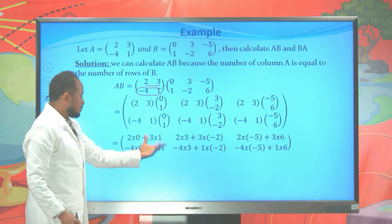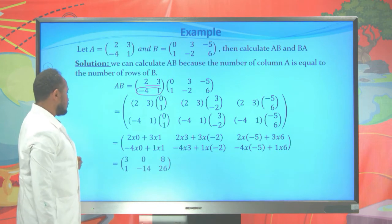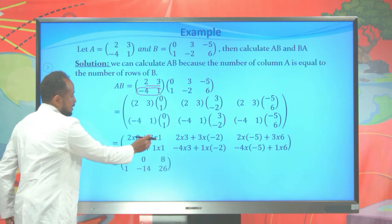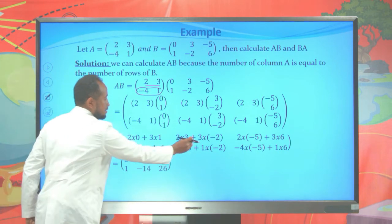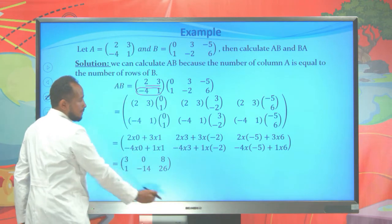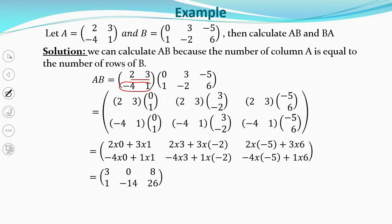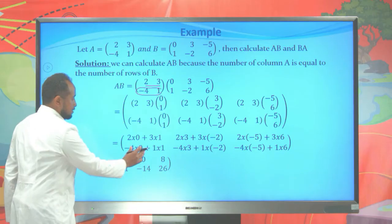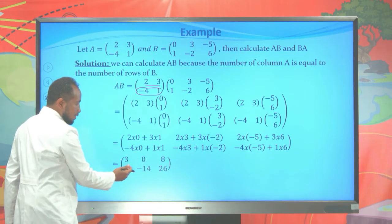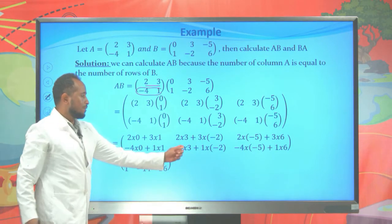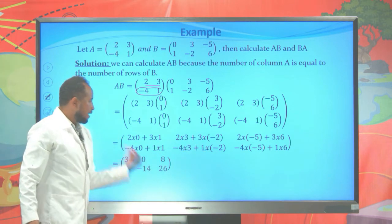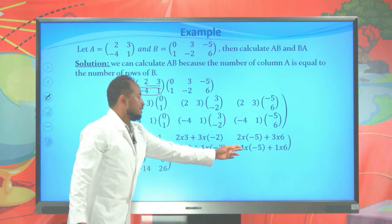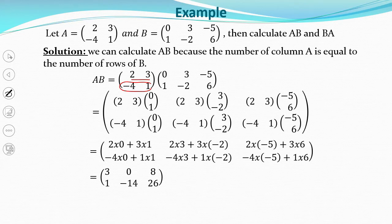Simplifying: 0 + 3 = 3; 6 - 6 = 0; -10 + 18 = 8; 0 + 1 = 1; -12 - 2 = -14; and 20 + 6 = 26. So the product A times B equals the matrix [3, 0, 8; 1, -14, 26]. Now we are also asked to find B times A.